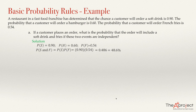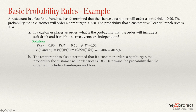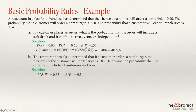The restaurant has also determined that if a customer orders a hamburger, the probability the customer will also order fries is 0.85. We need to determine the probability that the order will include a hamburger and fries. This 0.85 is the probability that the customer will order fries given that he or she ordered a hamburger — that is, P(F|H) = 0.85 — while the overall probability of ordering fries is 0.54.